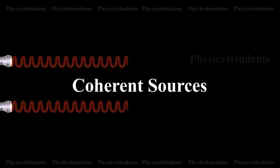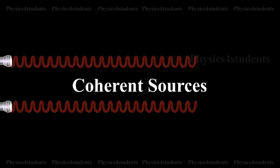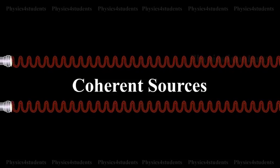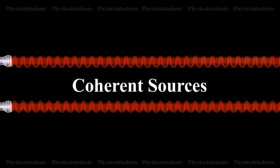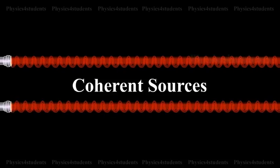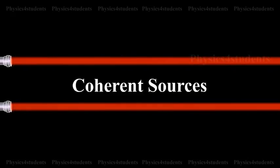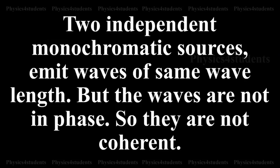Coherence Sources. Two sources are said to be coherent if they emit light waves of the same wavelength and start with same phase or have a constant phase difference. Two independent monochromatic sources emit waves of same wavelength but the waves are not in phase, so they are not coherent.